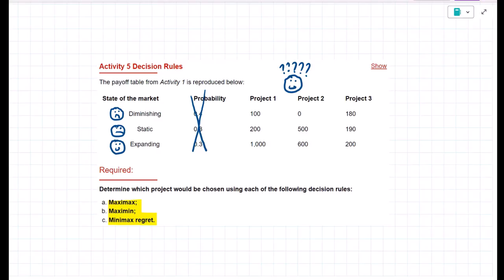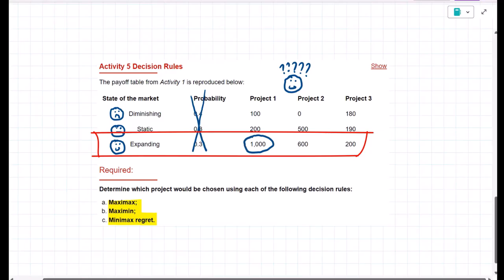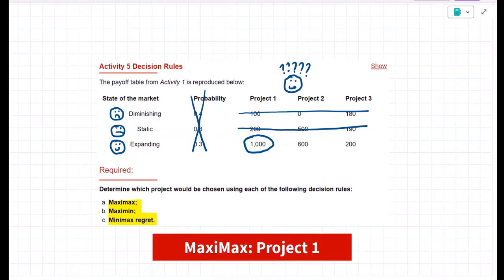Now, maxi max, that is the decision rule for the risk seeker. They want to maximize the maximum profit. So I look at these projects, I see that project one delivers the highest profit of $1,000. So that is the project that I choose. I ignore everything that I see in the worst case and other scenarios. Maximize the maximum profit. $1,000. I choose project number one.